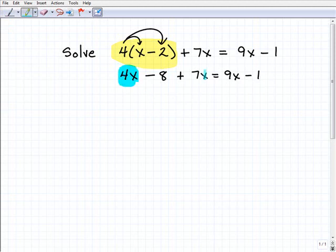Here I have 4x and 7x. I look on the right-hand side of the equation—I don't have any like terms, so I'll start working on the left-hand side. 4x plus 7x is 11x. I can write that as 11x minus 8 equals 9x minus 1.